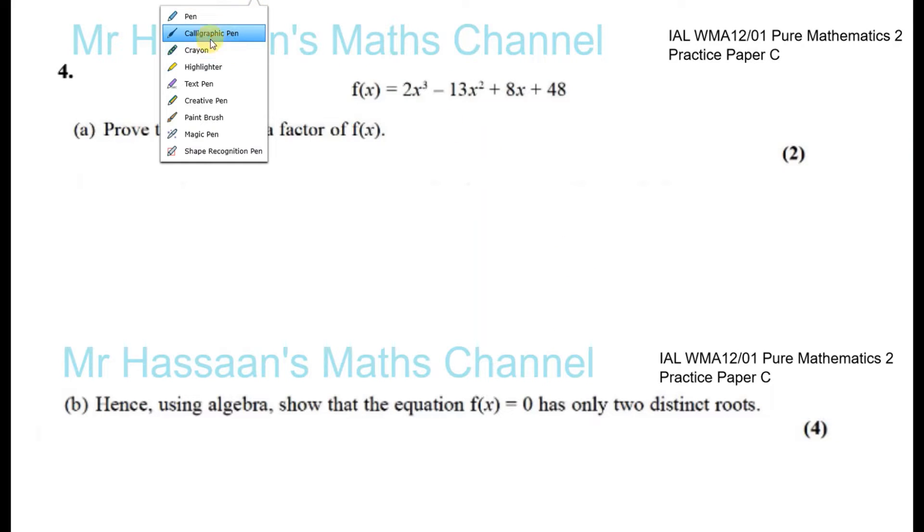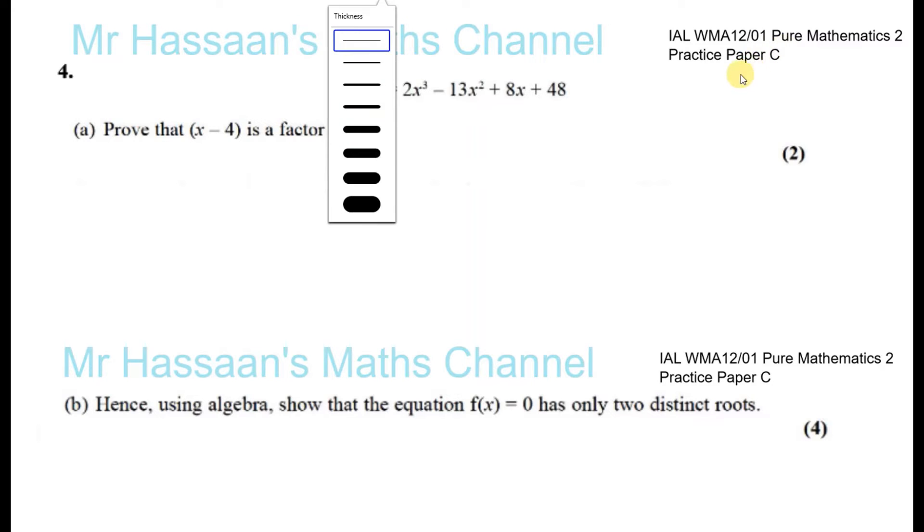Okay, here we have question number four from practice paper C for the P2 paper for the International A-Level. We've given an equation, a function f(x) equals 2x³ - 13x² + 8x + 48.